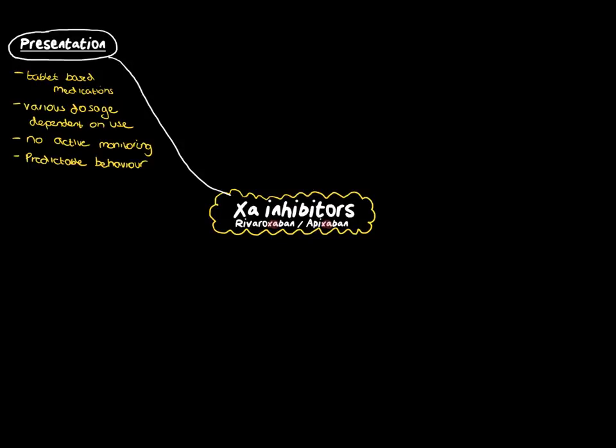When we look at the mechanism of action, as I've said, the direct factor Xa inhibitors, what that means is there's no effect on the intrinsic or the extrinsic components of the coagulation cascade. They predominantly and exclusively exert their effect within the common component of the coagulation cascade, and you can see that in the diagram currently demonstrated on the screen now.